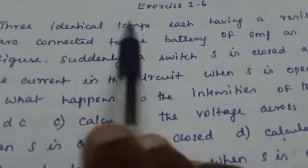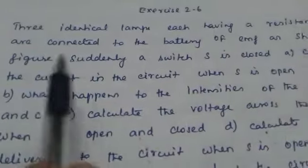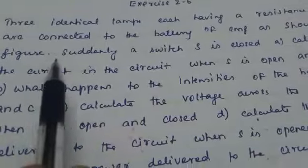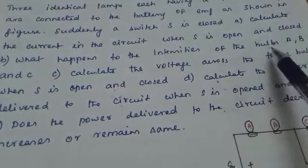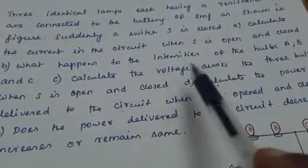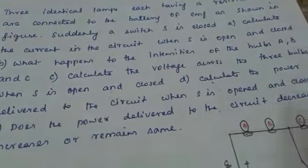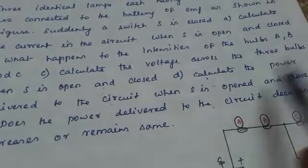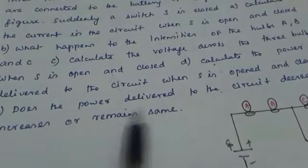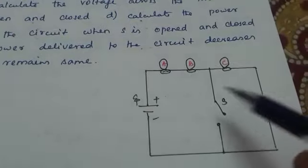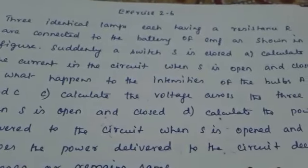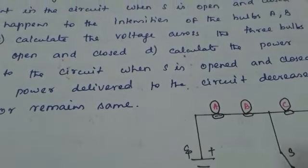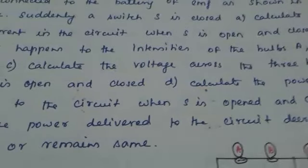Exercise 2.6. Three identical lamps each having a resistor R are connected to a battery of EMF ψ as shown in the figure. Suddenly a switch S is closed. We need to calculate the current in the circuit when S is open and closed, what happens to the intensities of bulbs A, B, and C, calculate the voltage across the three bulbs when open and closed, and calculate the power delivered to the circuit when open and closed.